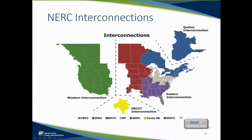Here is a graphical representation of the interconnections. As you can see, the Western Interconnection is the largest geographically, but in terms of load, it is the second biggest. The Eastern Interconnection is the largest in terms of load with 600,000 MW of load. The Western Interconnection is second with 140,000 MW of load, followed by the Texas Interconnection with 75,000 MW of load, and finally the Quebec Interconnection with 40,000 MW.